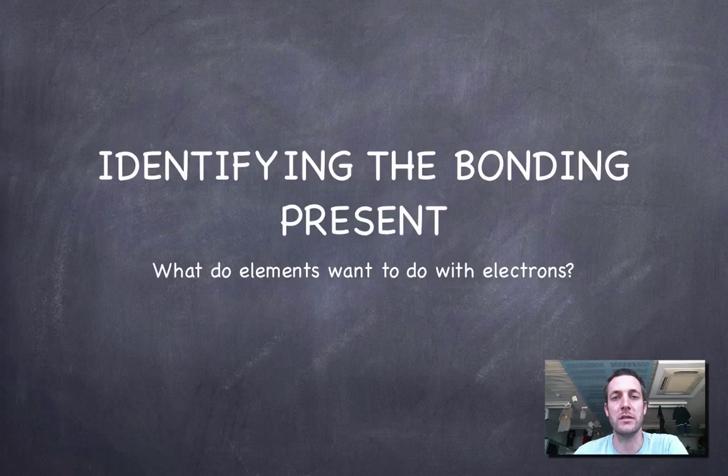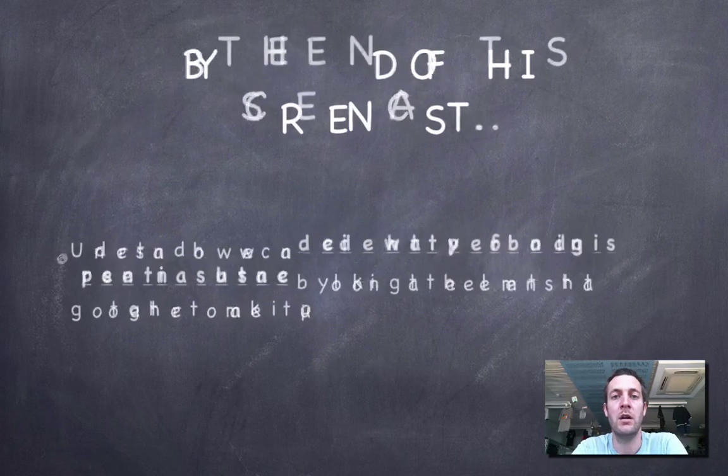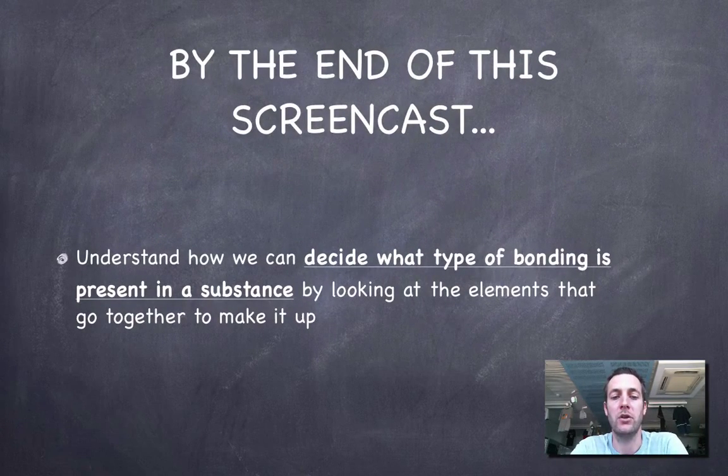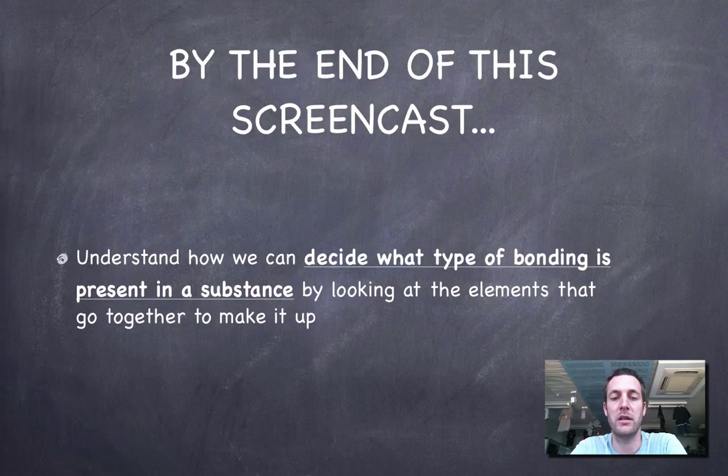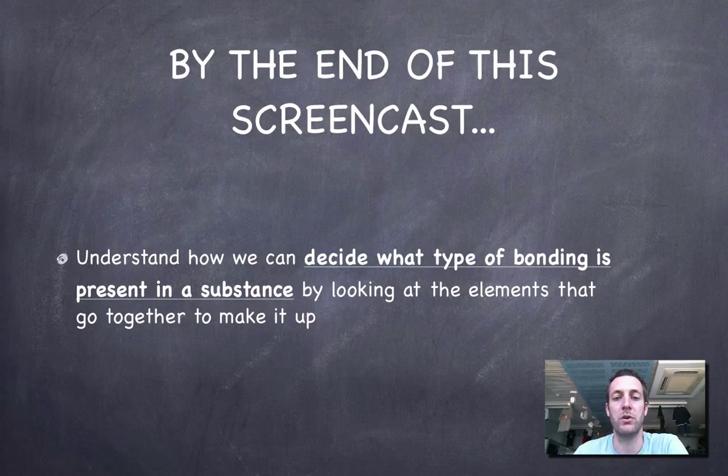We're not going to look in depth at what these different types of bonding are. We're just going to see how we can look at the elements that go together to make a substance up to decide what type of bonding we've got.